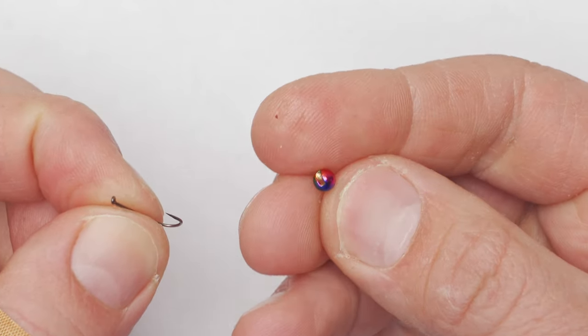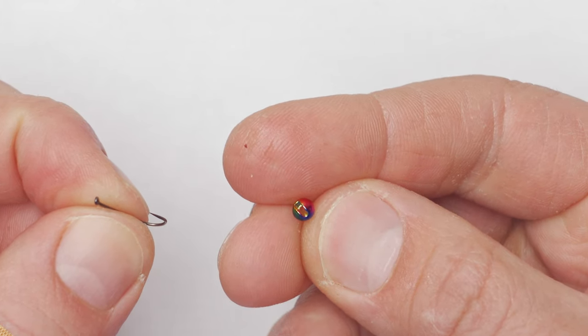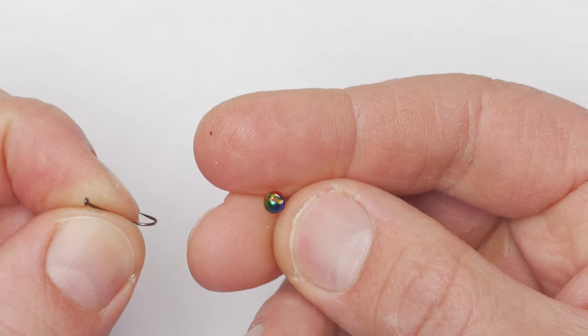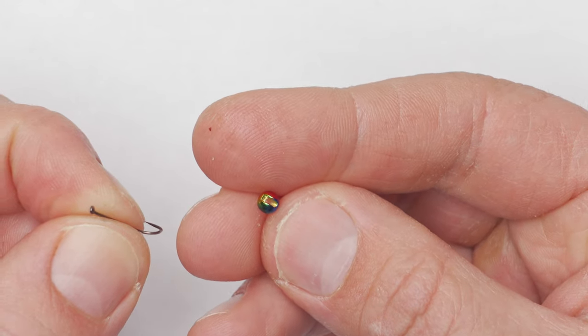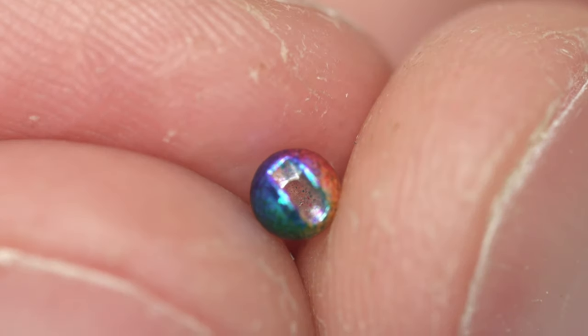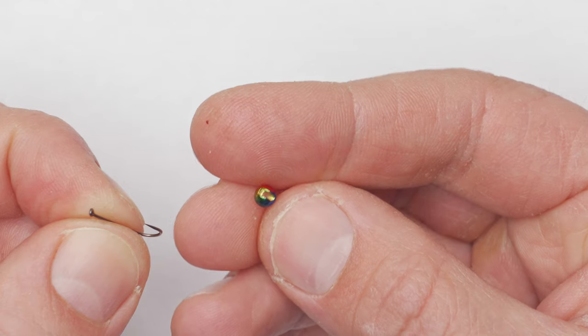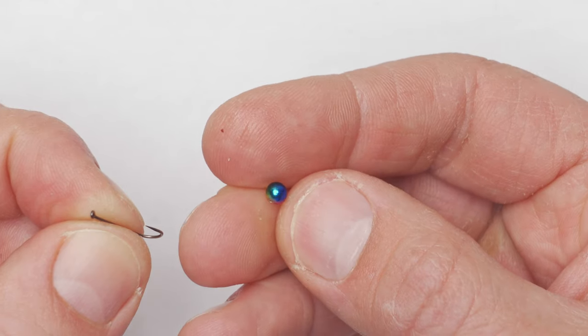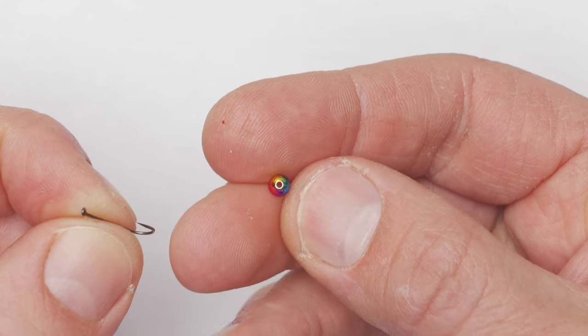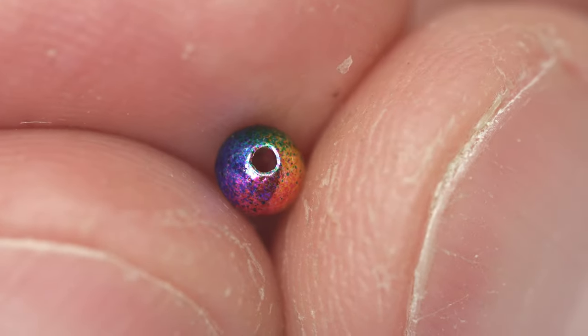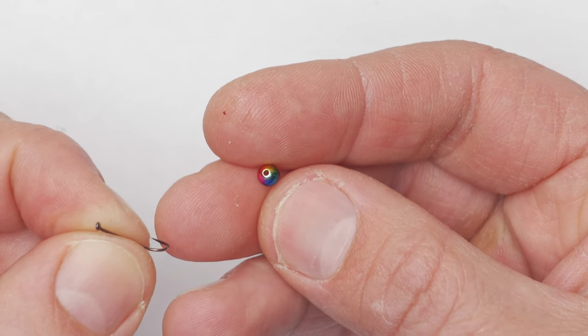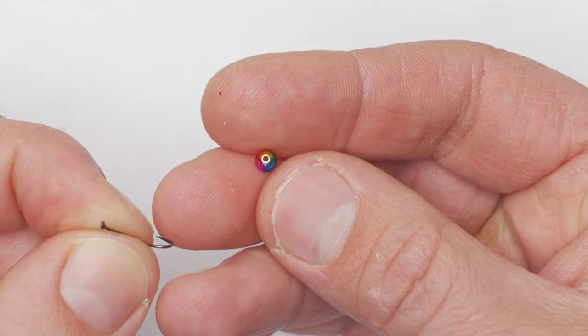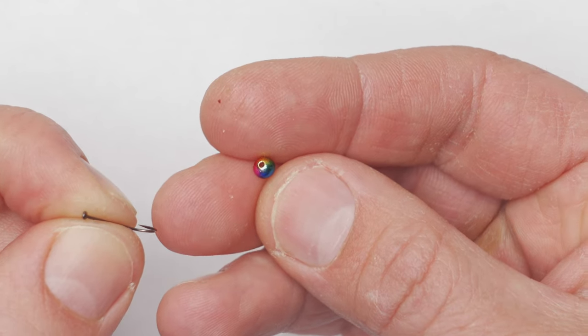As you can see, that slotted bead has a hole through it. One side of that hole or entering into the bead is quite open, that's the slotted side, and the other side has a much smaller hole. So I want to start threading that bead onto the hook from the side which has the smaller hole.